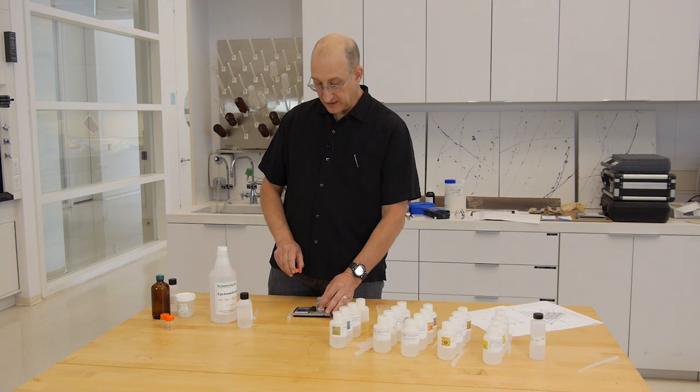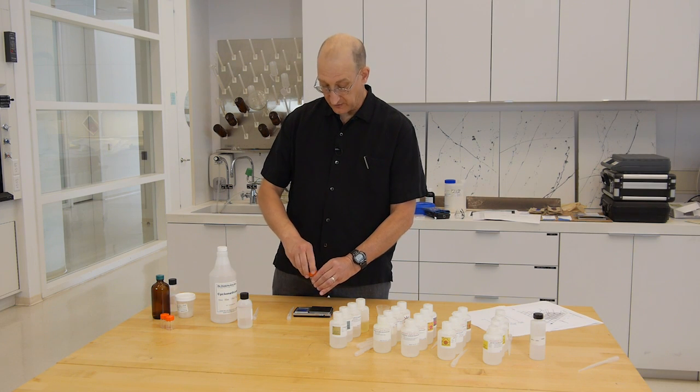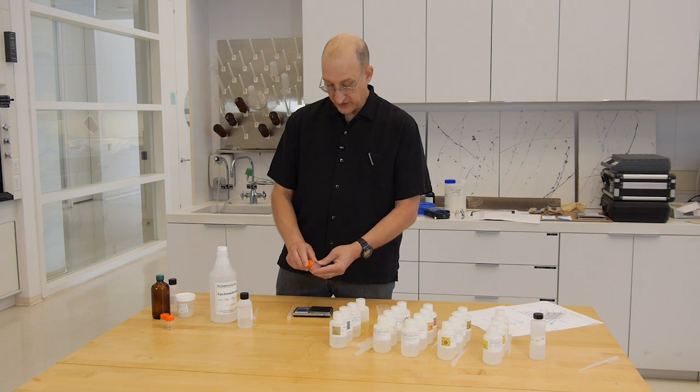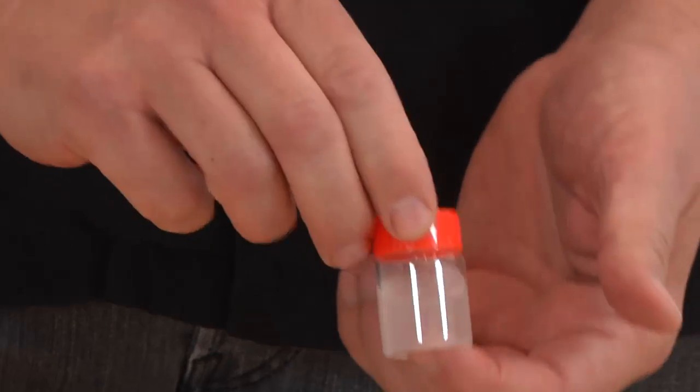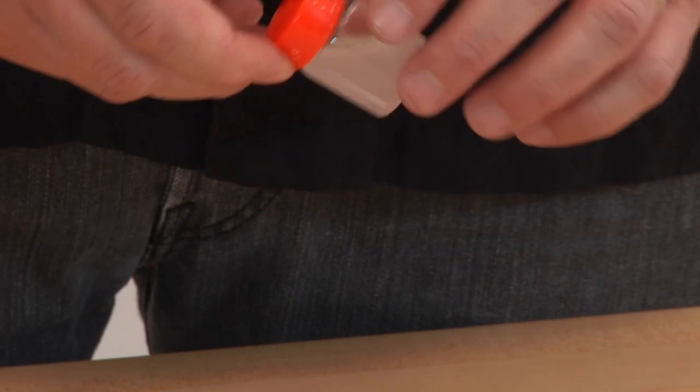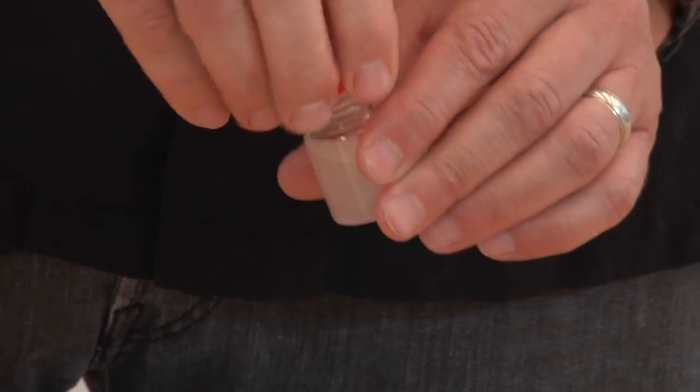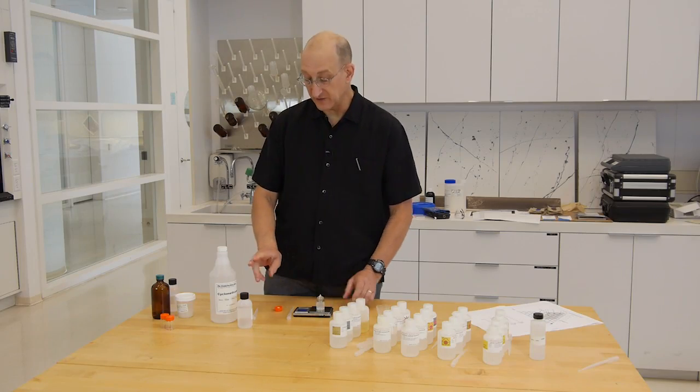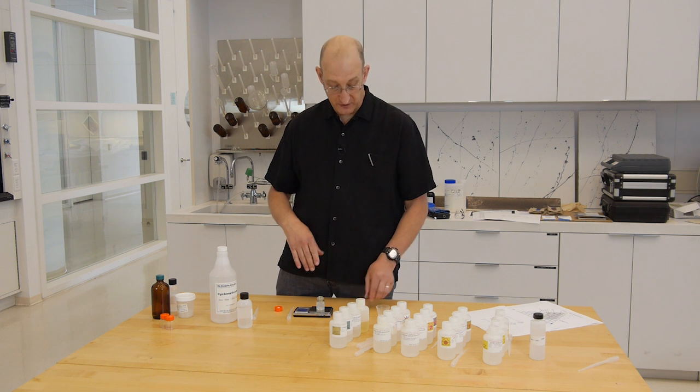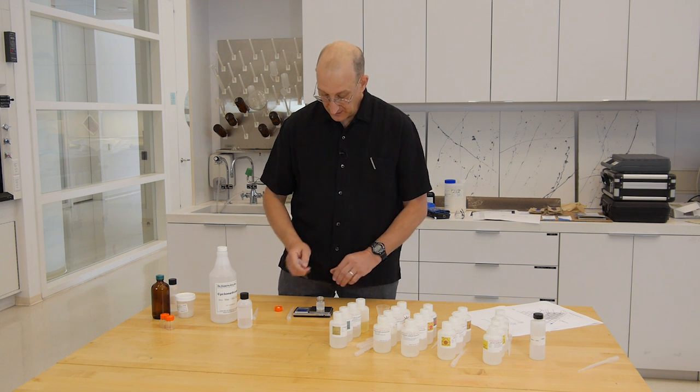You'll notice that the ECOSURF is soluble in the cyclomethicone. So just shaking them up, we should have a clear solution. This demonstrates the fact that we can clear this material with the cyclomethicone, that the surfactant will dissolve in the cyclomethicone on clearing on the surface of the painting.